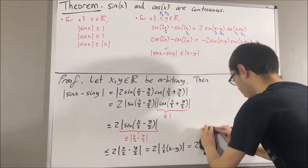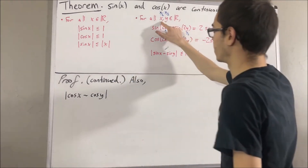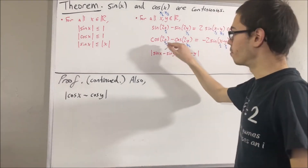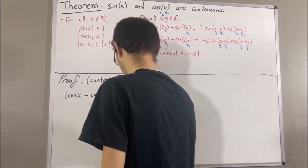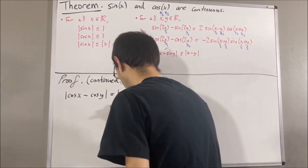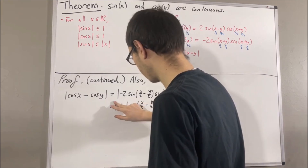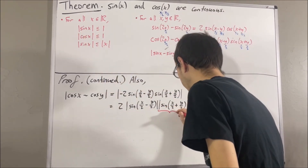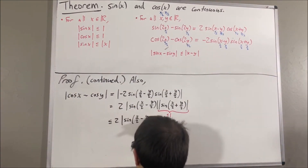Now we're going to prove a similar result for cosine. Applying this result again, taking x to be x over 2 and y to be y over 2, we have cosine of x minus cosine of y is equal to negative 2 times sine of (x over 2 minus y over 2) times the sine of (x over 2 plus y over 2). We can split this up into a product of absolute values, and the absolute value of negative 2 is just 2. The absolute value of the sine of anything is less than or equal to 1, so this quantity must be less than or equal to 1, and therefore this entire thing must be less than or equal to 2 times the absolute value of sine of (x over 2 minus y over 2).